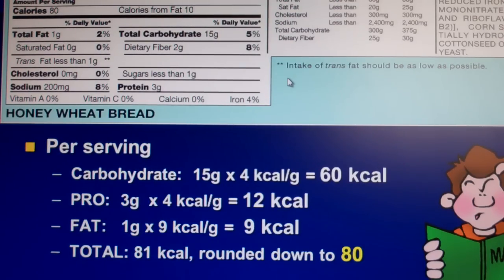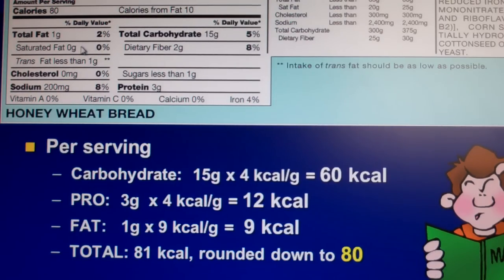If you look at this food label, you will see that it lists the total amount of calories, calories from fat, serving size, and how many servings are in a container. What I wanted to look at is per serving how many carbohydrates, proteins, and fats are in this — and what are we looking at? We're looking at honey wheat bread.